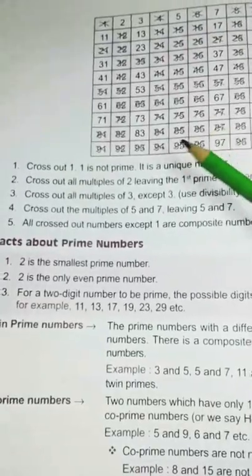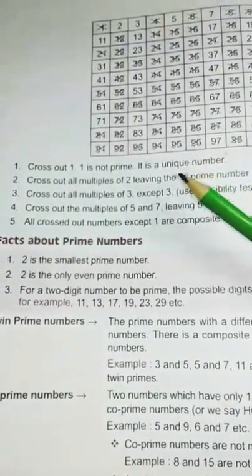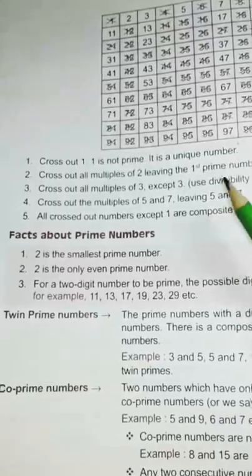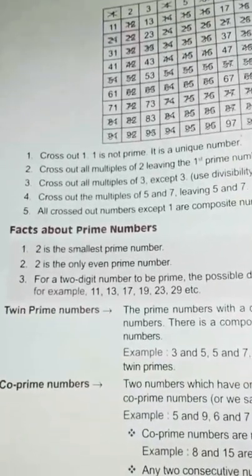Then, children, you list 1 to 100, which are prime numbers and which are composite numbers. This is your homework.